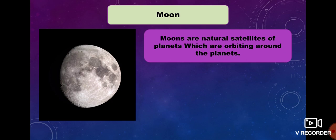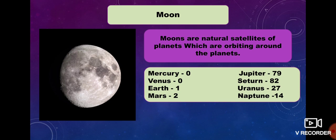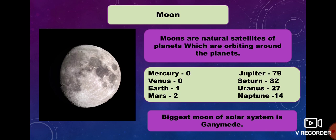Moons are the natural satellites of planets which orbit around their planet. Mercury has no moon, Venus has no moon, Earth has one moon, Mars has two moons, Jupiter has 79 moons, Saturn has 82 moons, Uranus has 27 moons, and Neptune has 14 moons. The biggest moon of the solar system is Ganymede, which is the moon of Jupiter.